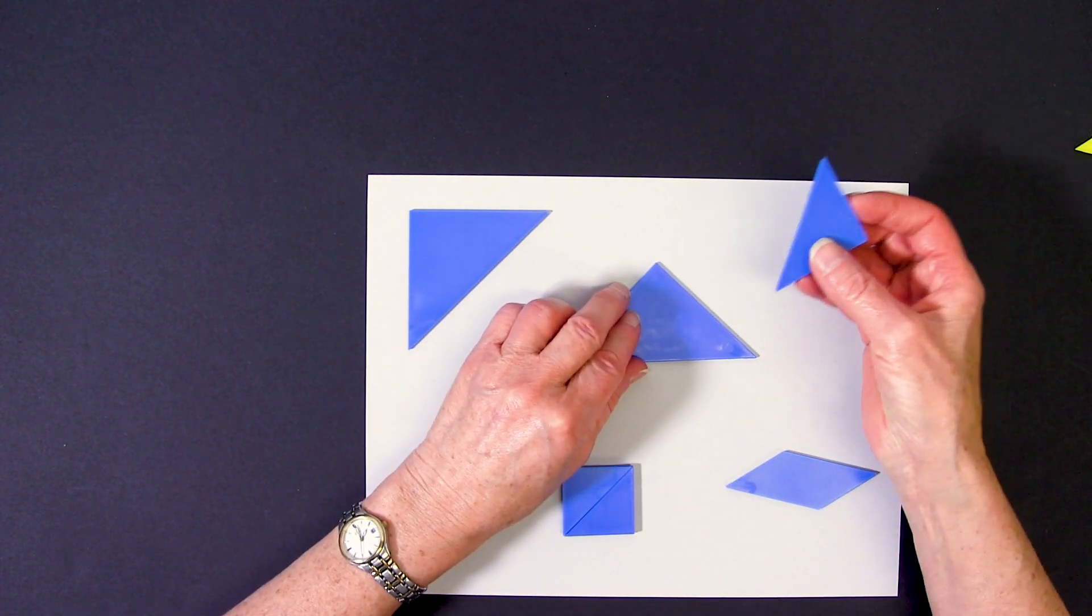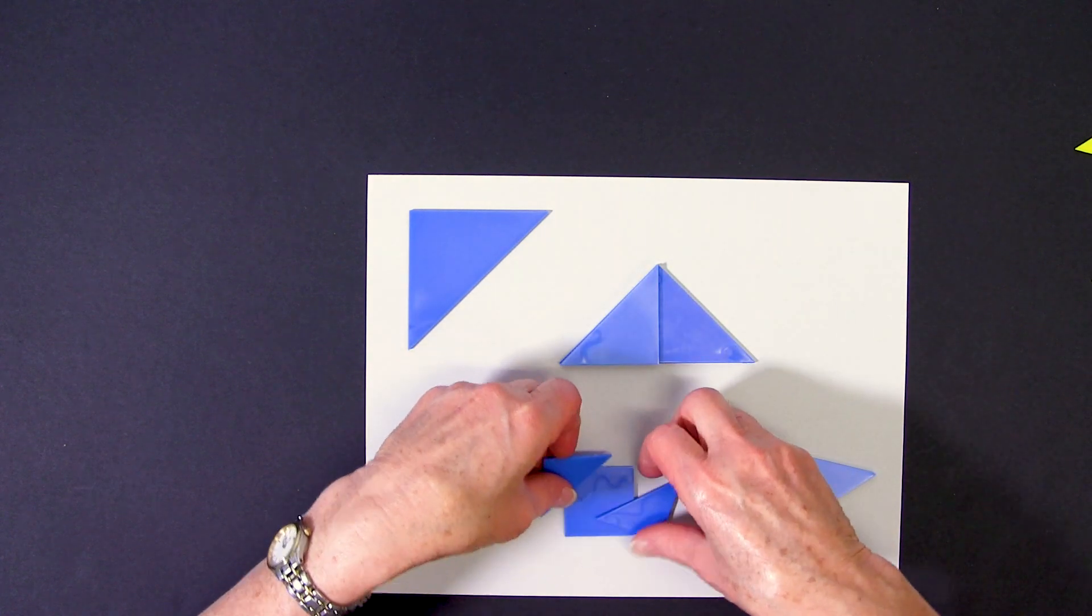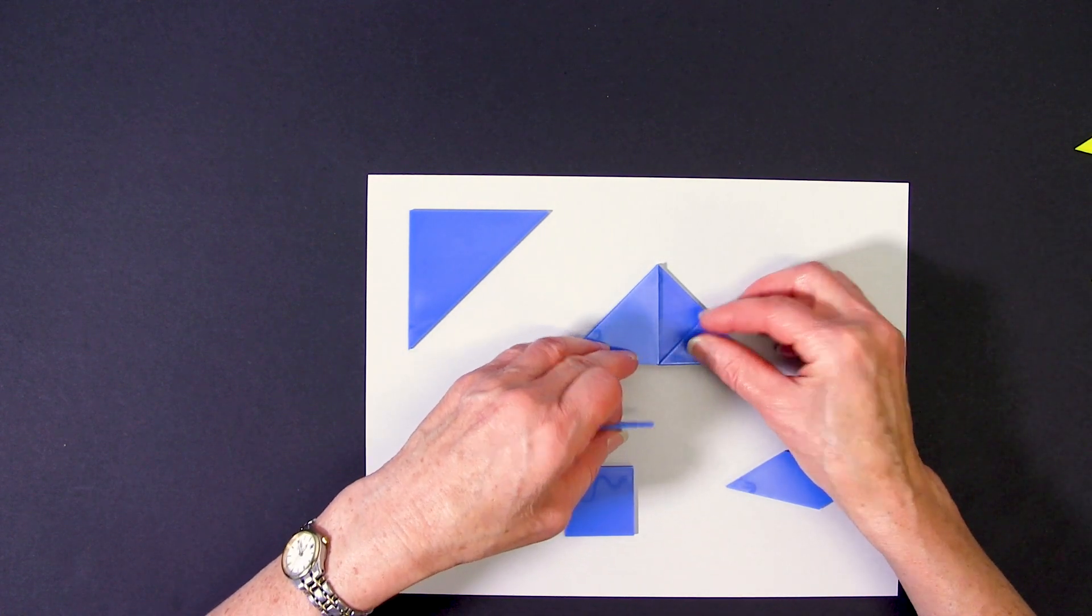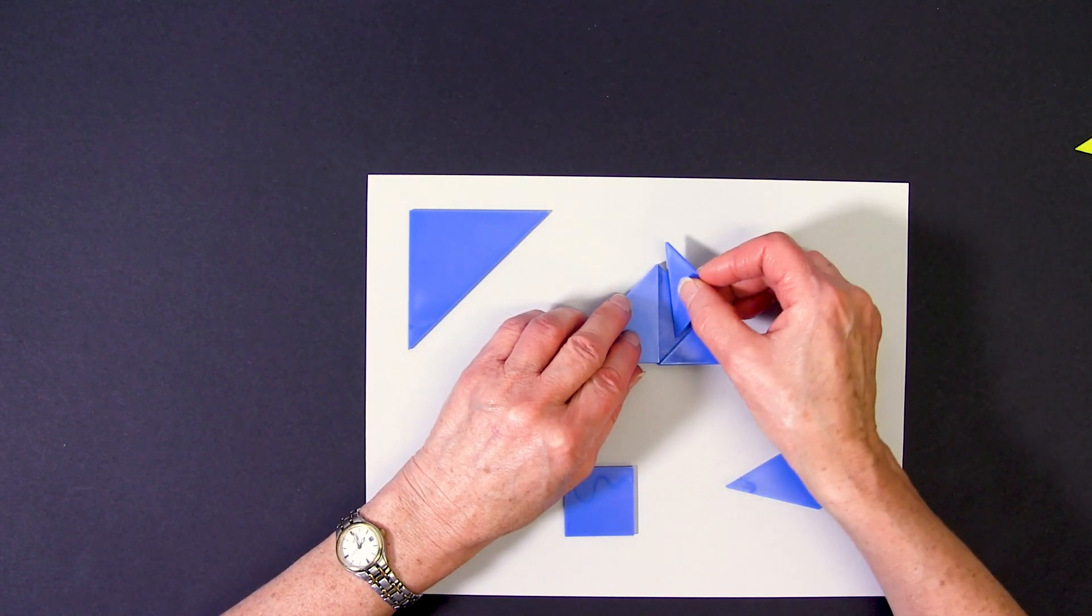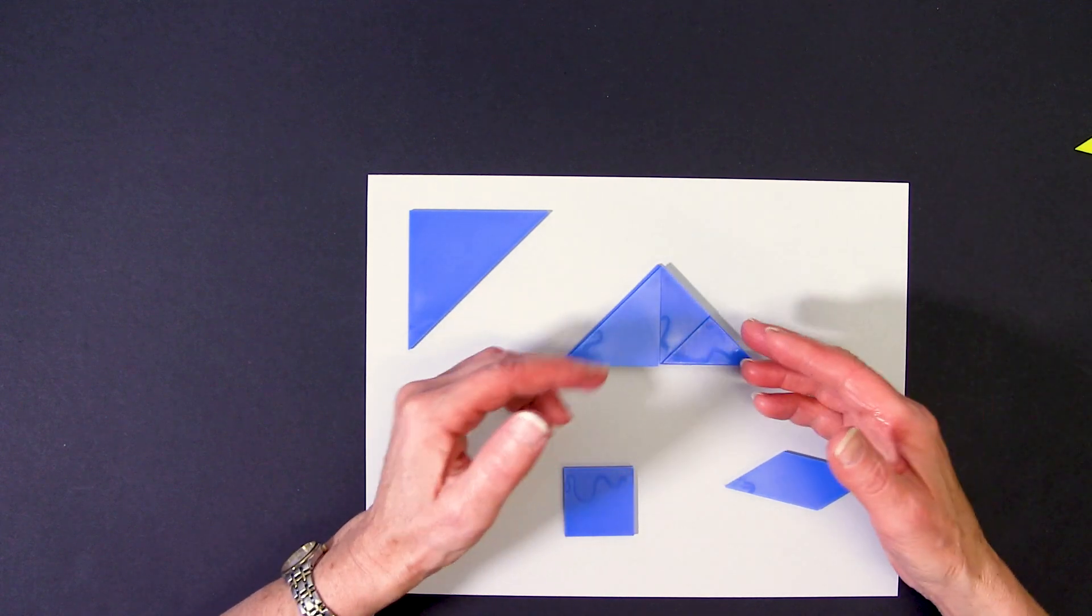I could take the medium triangle and the two small triangles and arrange them to form the large triangle.